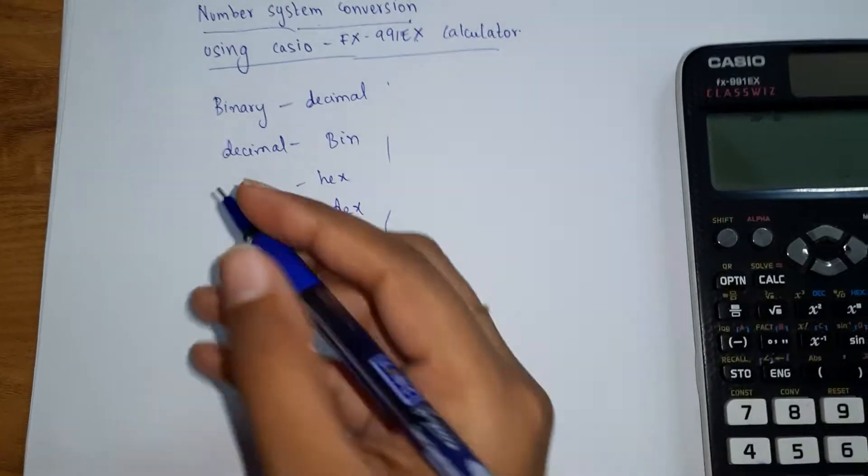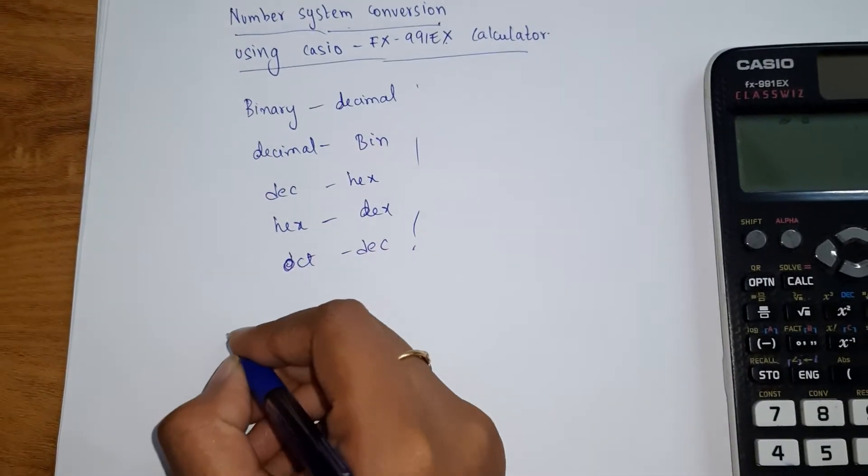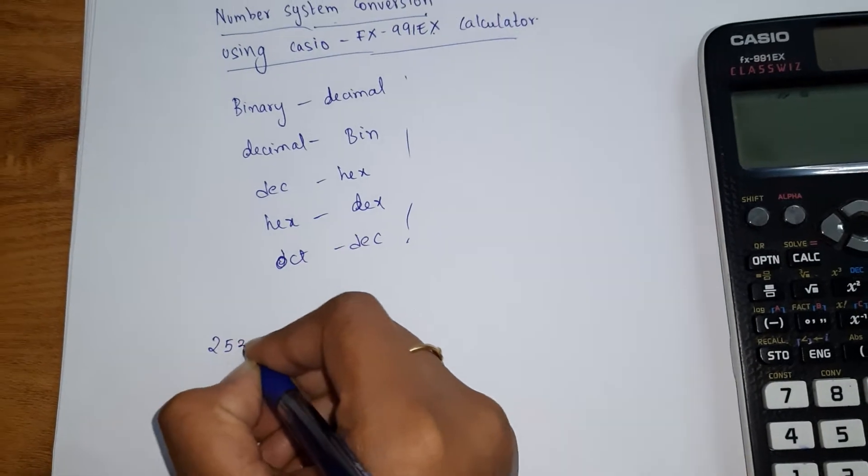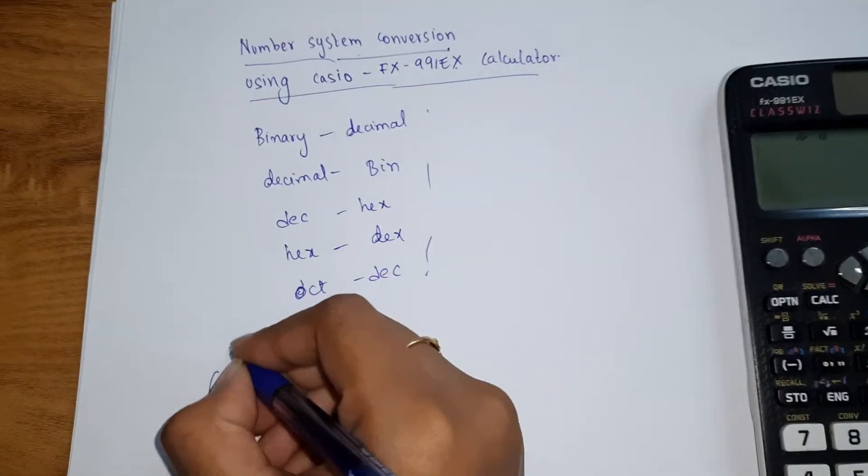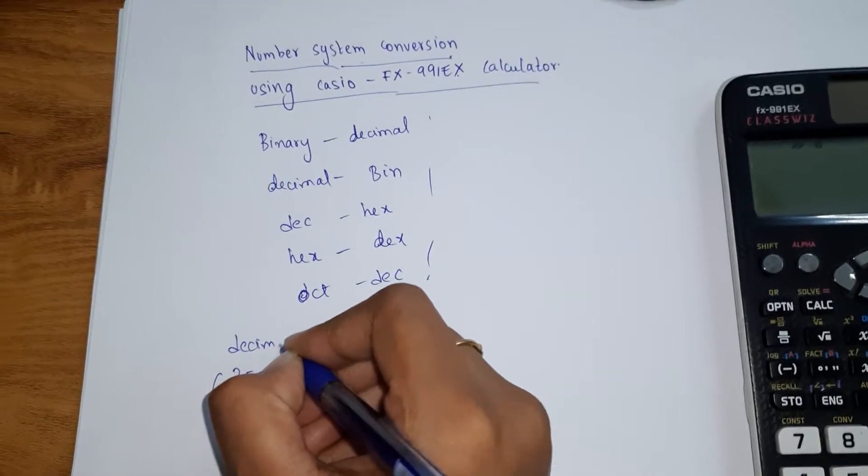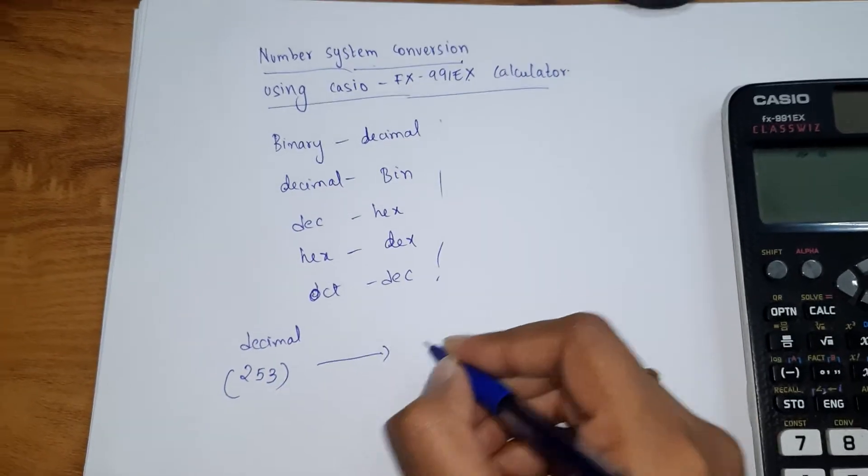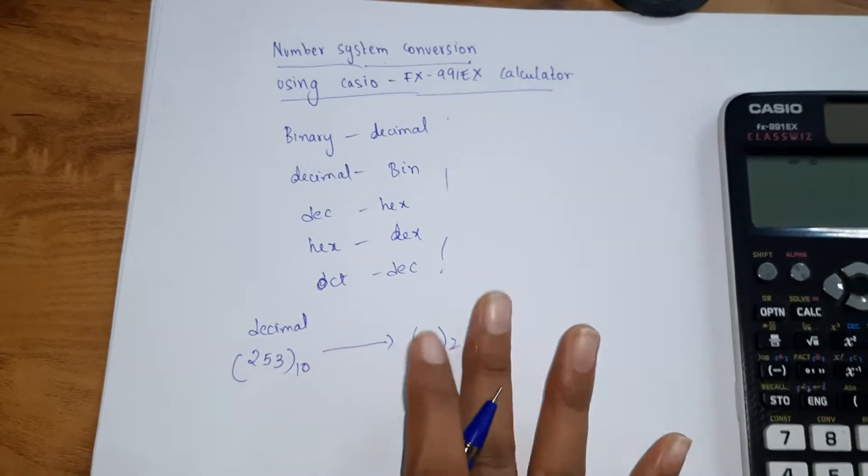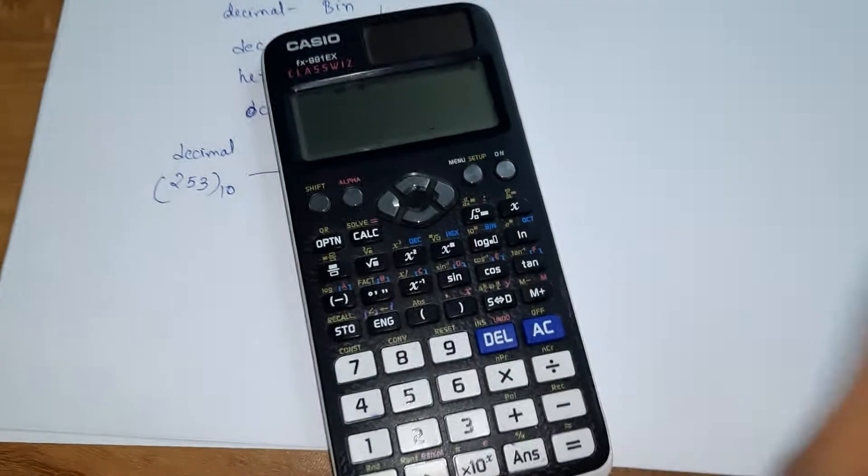See, first of all I have taken a binary number. So what is that? 253. 253 is what? I'm sorry, this is a decimal number. Decimal number that I am converting into binary, that is base 2, right? This is base 10. So how to convert using the calculator we are going to see now.